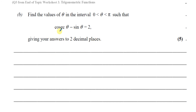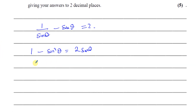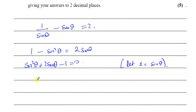To solve this, I'll change cosec theta into one over sine theta, so I have one over sine theta minus sine theta equals two. Then I'll get rid of the fraction by multiplying both sides by sine theta, giving one minus sine squared theta equals two sine theta. Now I've got a quadratic, so I bring everything onto one side, making sine squared positive: sine squared theta plus two sine theta minus one equals zero.